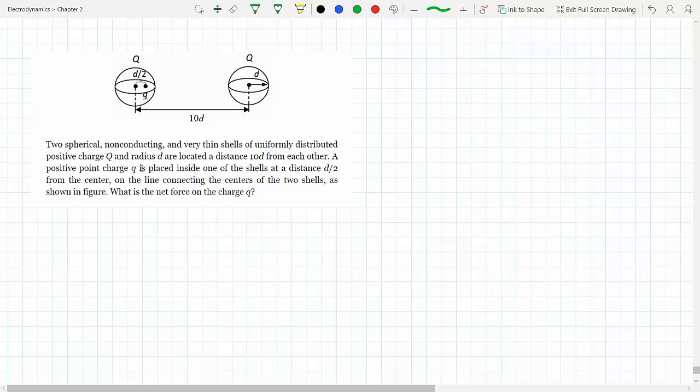Then you place a charge small q inside one of the shells distance d over 2 from its center on the line connecting the centers of the two shells. Note the word connecting the centers, because had it not been connecting the centers, the problem would probably take much longer and hence would probably not be on a GRE exam.